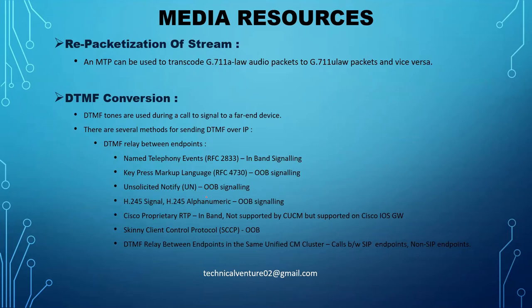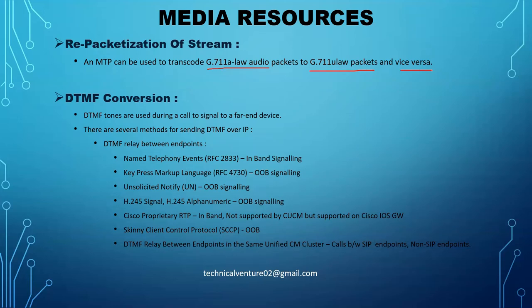MTP can be used to transcode G.711 A-law audio packets to G.711 mu-law packets and vice versa. So your MTP can work as a transcoder as well — this is also a form of transcoding. If your phone A is using G.711 A-law and your phone B is using G.711 mu-law, you don't need a full transcoder. You can use the MTP to perform this conversion between phone A and phone B.